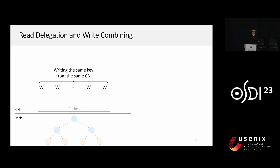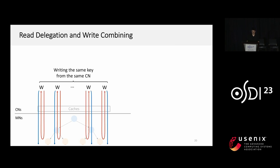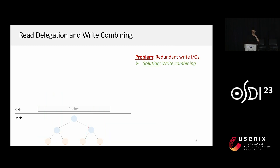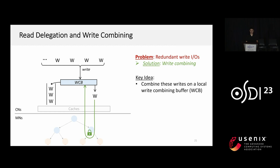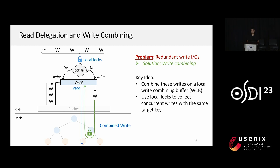For writes, when several clients write to the same key from the same compute node, they are synchronized by the same remote lock, increasing remote concurrency conflict and introducing redundant read IOs. SMART proposes a write combining technique: writes are combined into a local write-combining buffer. The first client writes its expected value into the local buffer and acquires the remote lock, while other clients write their expected values into the buffer and push themselves into a waiting queue. The first client then reads the combined result from the buffer and conducts the remote write and lock release.